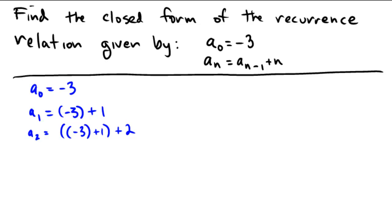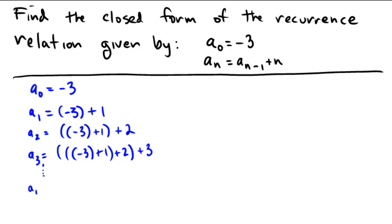Notice how I'm keeping it in its current form so I can look for simplification. a sub 3 would be again the previous term, and then added on to the end would be an n which would be 3 in this case, and so on and so forth. So what does a sub n end up looking like?